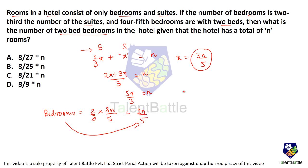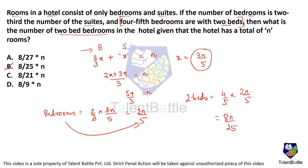Now out of the total bedrooms, 4/5 of bedrooms have 2 beds. So 2-bed bedrooms are 4/5 of the total bedrooms, which is 4/5 of 2n/5. That gives us 8n/25. So 2-bed bedrooms are option B: 8/25 times n.